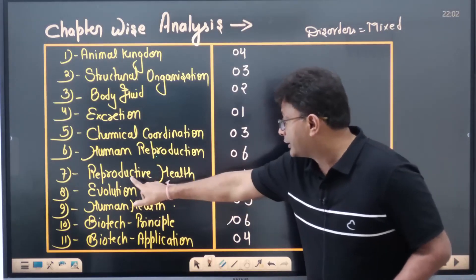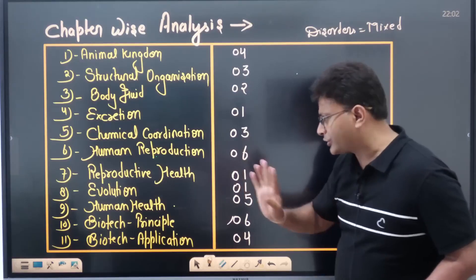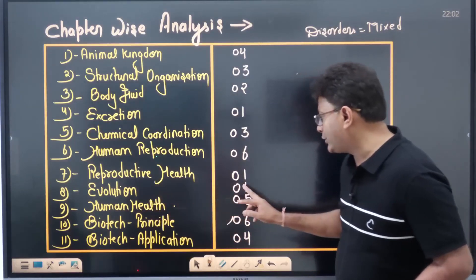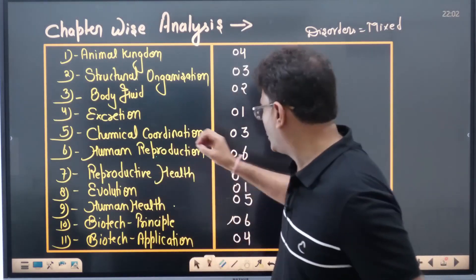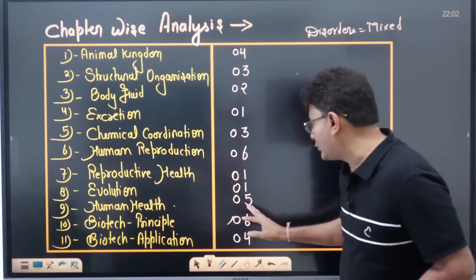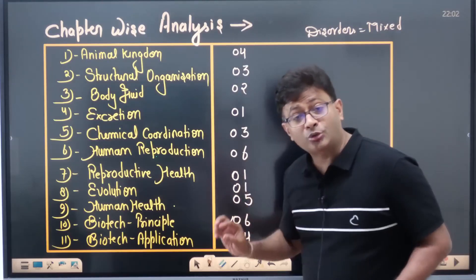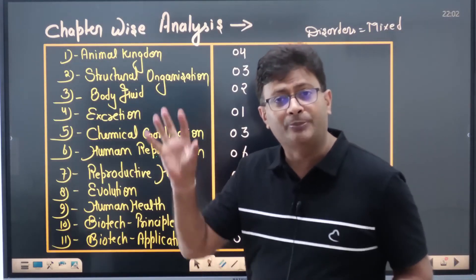Three questions came from chemical coordination, six questions came from human reproduction, which was always the weightage of four questions. One question came from reproductive health; there was a weightage of two questions. One question came from evolution, but that too was out. I had also said that a question would come from homology analogy.